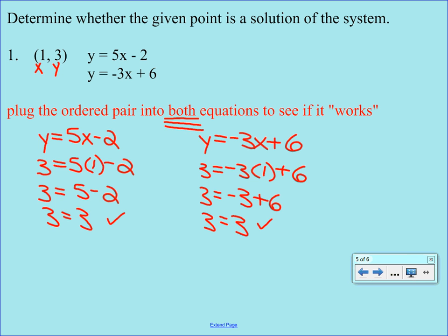So this one checks out as well. So then the answer here would be yes. This is a solution. So if you were to plot both of these lines on graph paper and look at where they would cross, they would cross at exactly the point 1, 3.